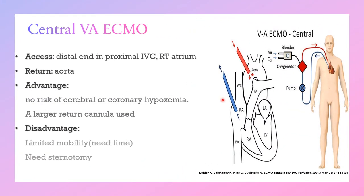The second type of veno-arterial ECMO is central VA ECMO. The drainage cannula is placed at the distal end, in the proximal inferior vena cava or right atrium, and the return cannula is placed in the aorta. The advantages include no risk of cerebral or coronary hypoxemia and the ability to use larger return cannulas. The disadvantages are limited mobility, it takes more time to perform, and it requires sternotomy — so it is usually done post-cardiac bypass.